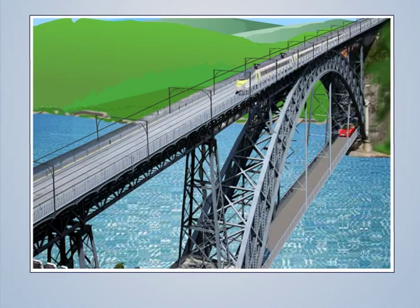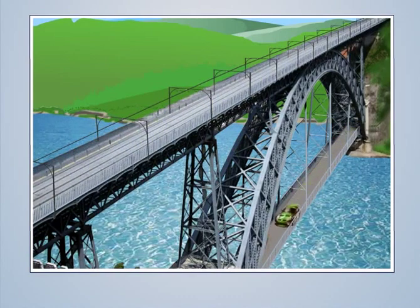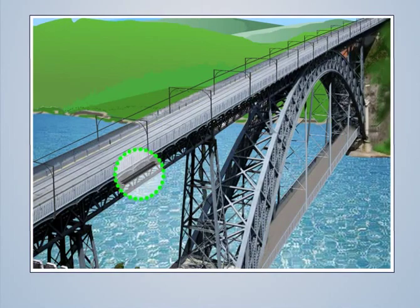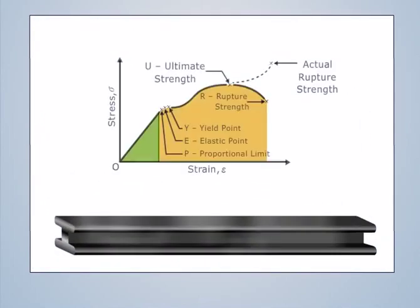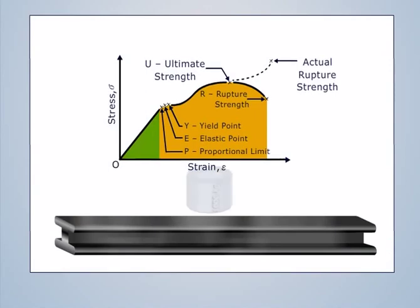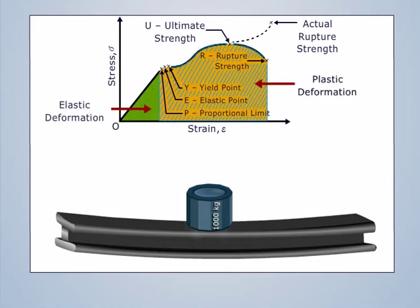To understand the effect of stress and strain on any material, like the materials used in a bridge, we need to plot a stress-strain diagram. A stress-strain diagram is a graph that represents the behavior of a material under an increasing load condition. It contains three zones: Elastic Deformation Zone, Plastic Deformation Zone, and Rupture.